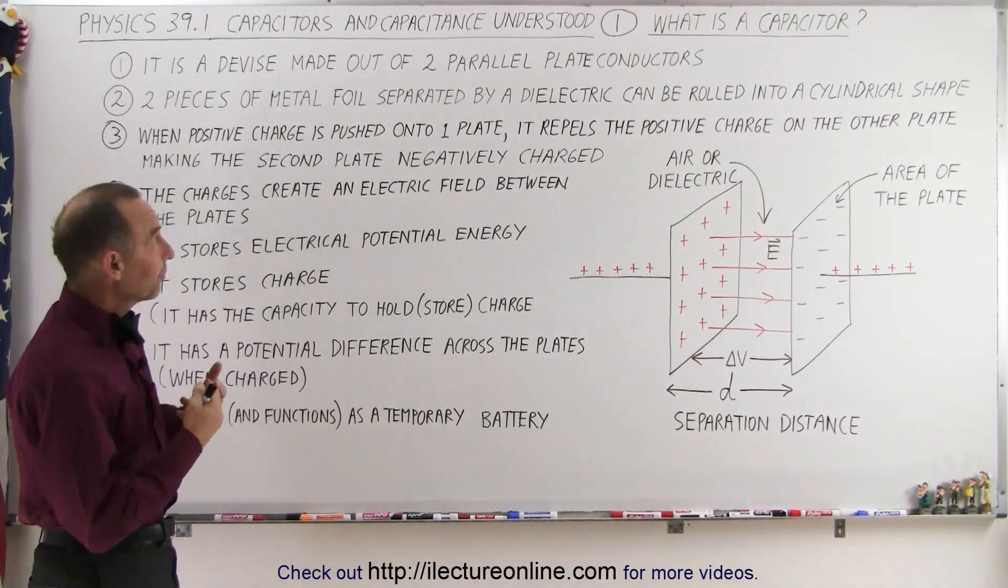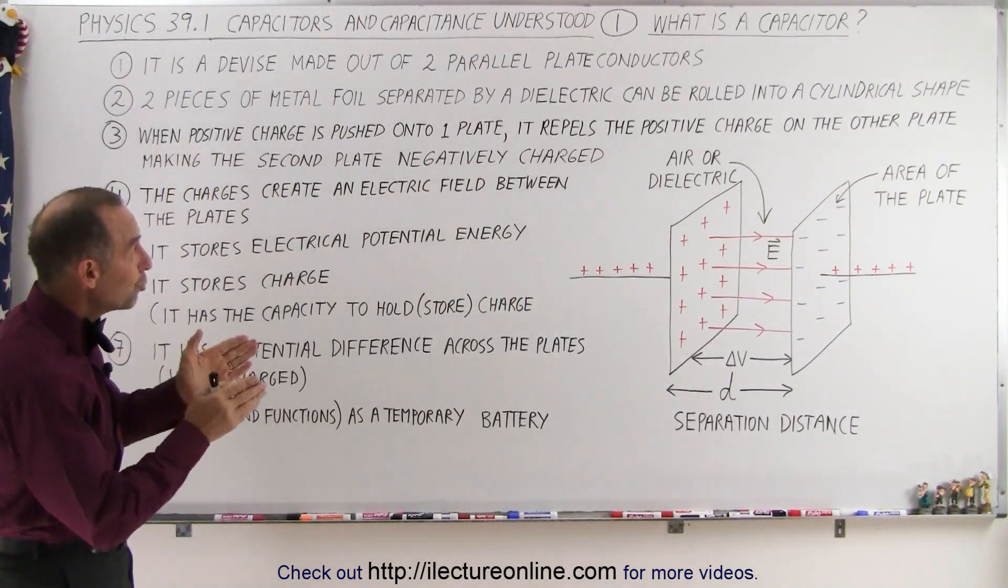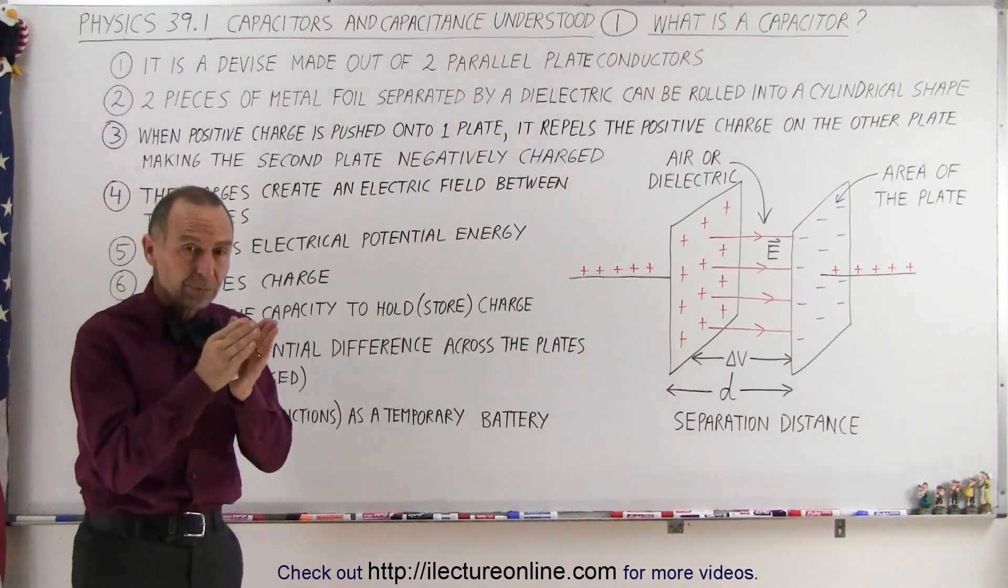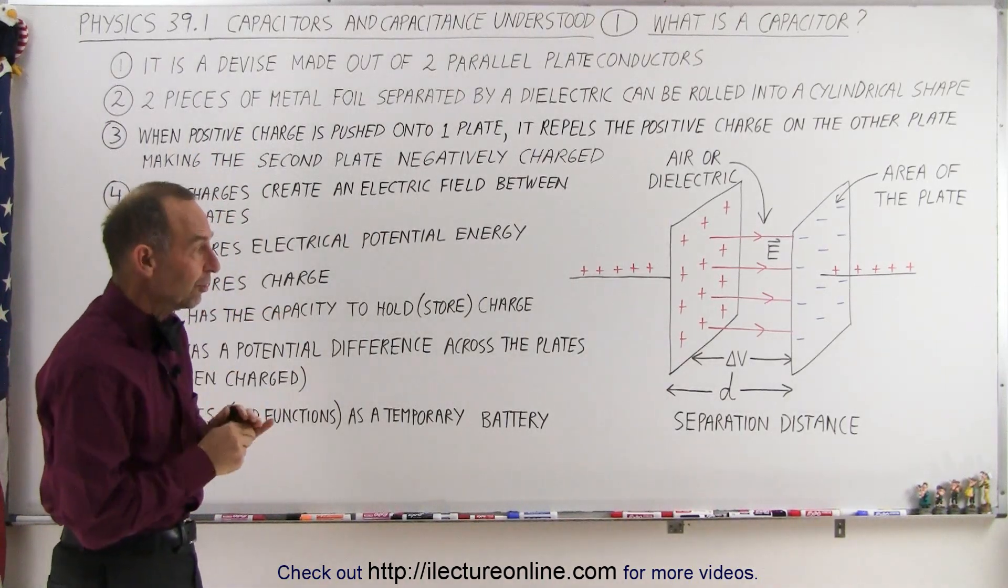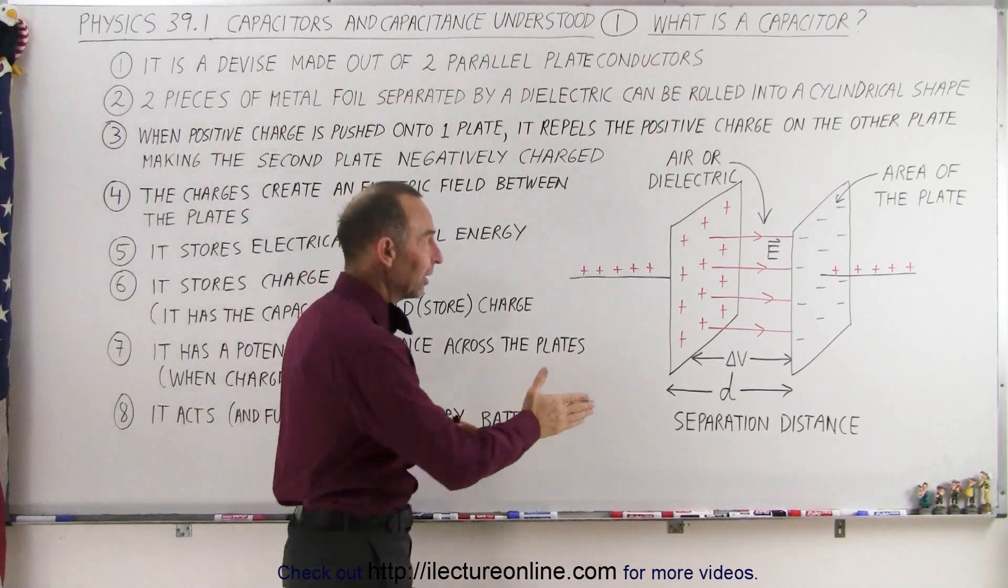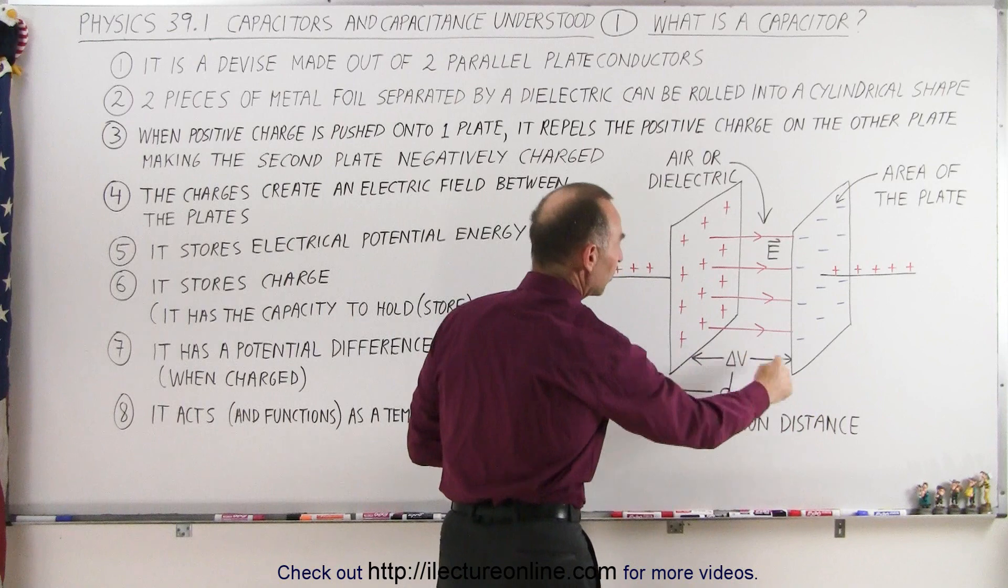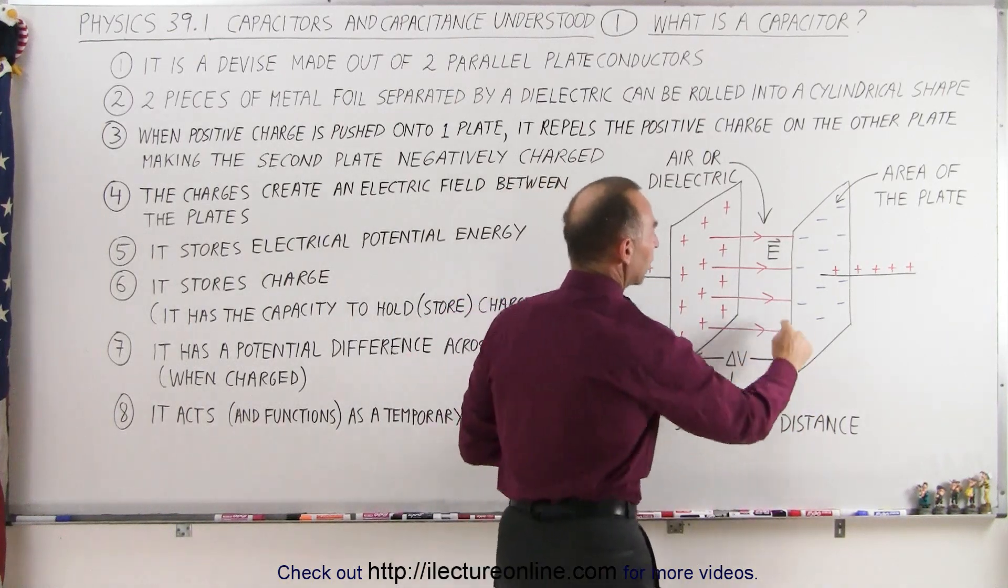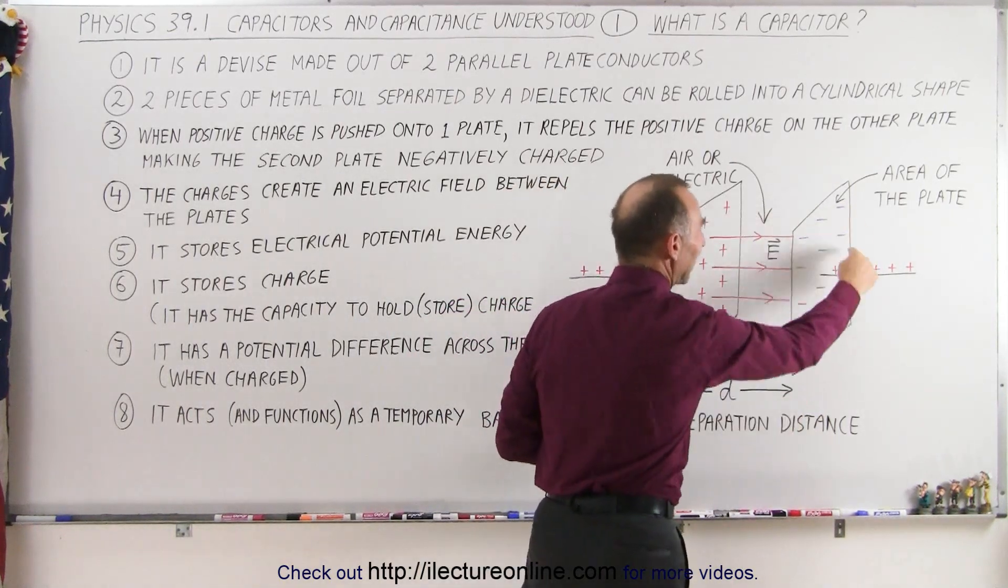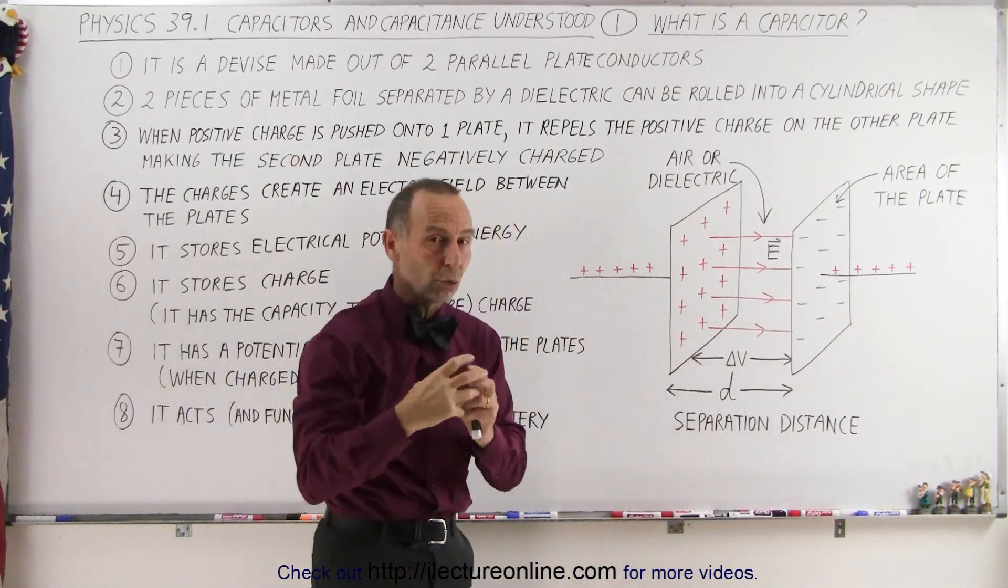Well, a capacitor is an electrical device that's made out of two parallel plate conductors that are facing each other, very closely spaced together. So basically we have two metal plates that are facing one another. There's a small separation distance between them, and the concept is that they have a certain amount of area on which they can store charge.